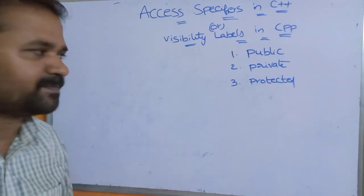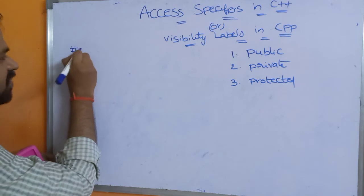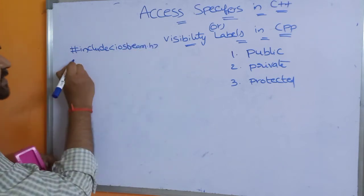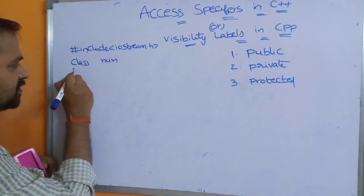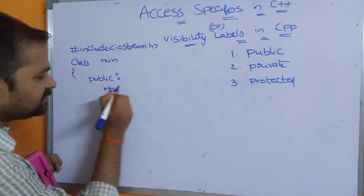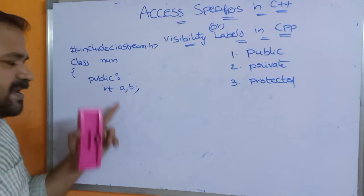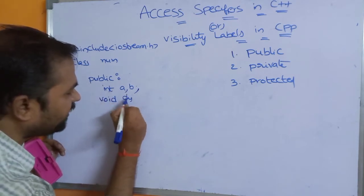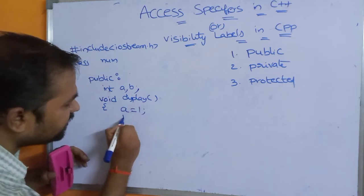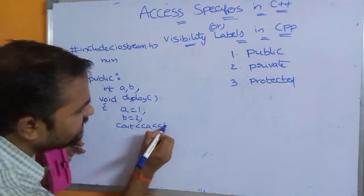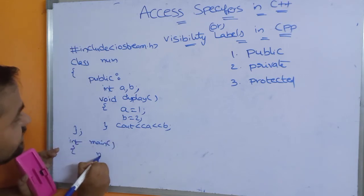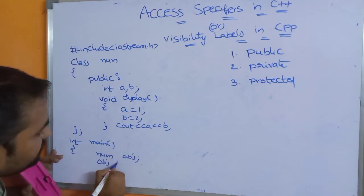Let us discuss these three access specifiers with the help of an example program. First, we include iostream.h, since cout and cin objects are present in it. We define a class named num. To demonstrate public, we declare a public section with two member variables: int a, b. Under the public section we also define a void display function, which assigns a=1 and b=2, then outputs a and b using cout. From main, we create object num obj and call obj.display.